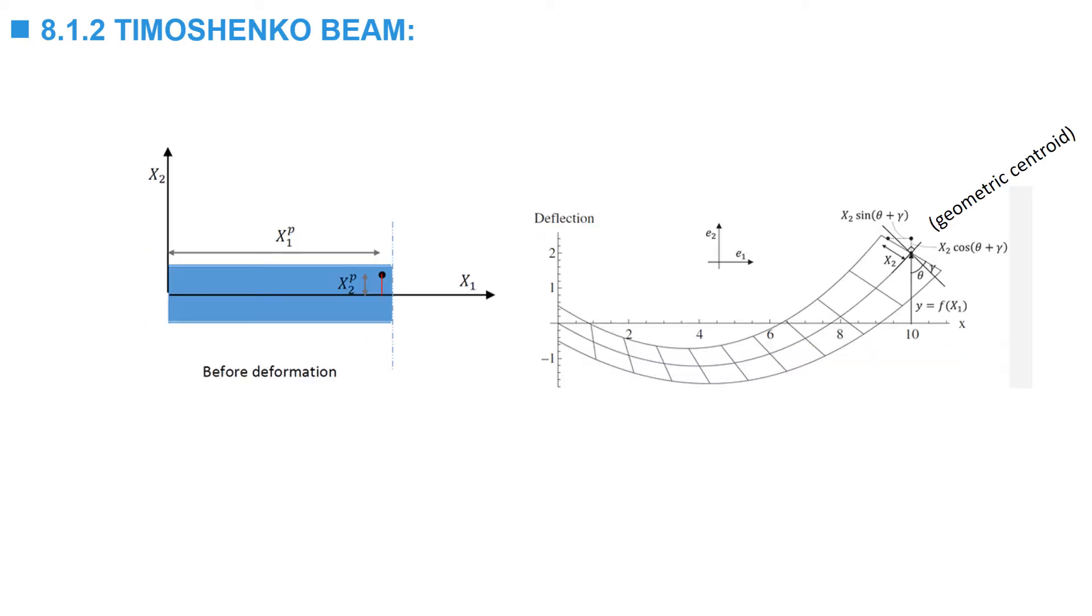This diagram depicts the possible deformation of a beam structure according to the Timoshenko beam formulation. You can observe from the figure that the cross-sections that were originally perpendicular to the geometric centroid or the line of the geometric centroids are no longer perpendicular. These lines, which were originally perpendicular to the line of centroids, are no longer perpendicular after deformation. They are rotated by a shear angle gamma.